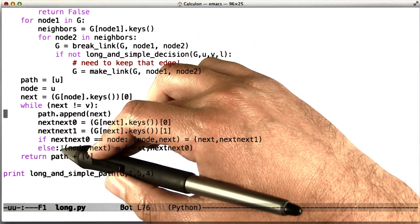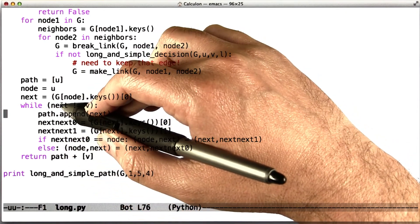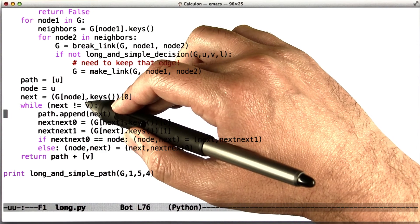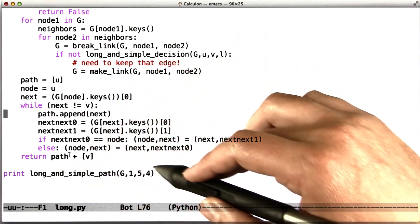When that loop is all through, then next is V, the very last step on the path, and we just add that into our path and return it.